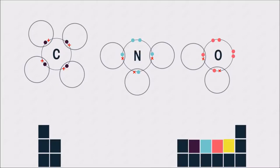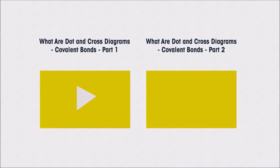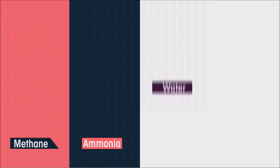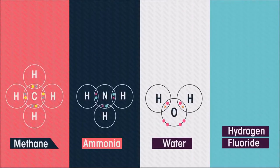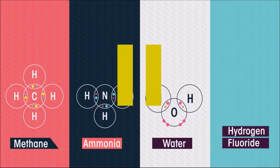We can draw the covalent bonding in these molecules using dot and cross diagrams. You should already have watched our video on dot and cross diagrams. Methane, ammonia and water bond like this. You can also represent them using rings to show the orbitals. Can you draw a dot and cross diagram for hydrogen fluoride? Pause the video and have a go.